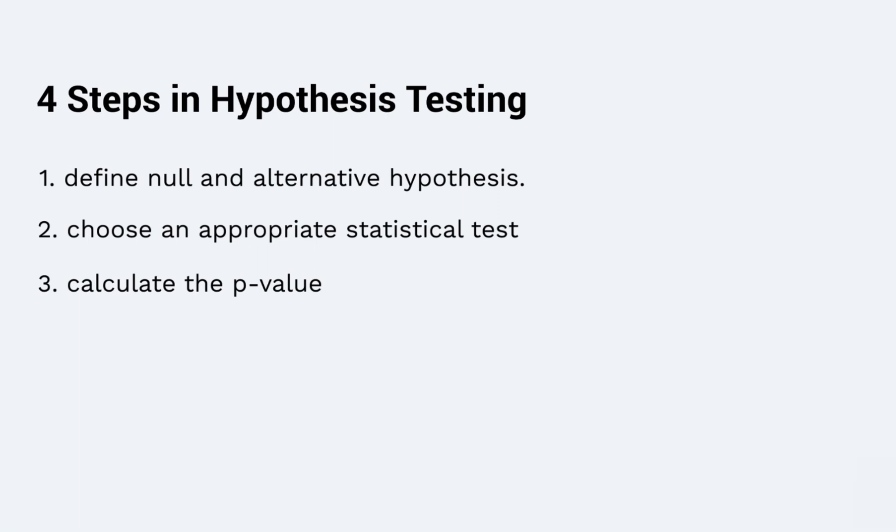The third step is to calculate the p-value. How p-value is calculated varies primarily based on which statistical test is chosen. Firstly, based on the mean and standard deviation of the observed sample data, we are able to derive the test statistics value. Then calculate the probability of getting this test statistic given the distribution of the null hypothesis, we will find out the p-value.